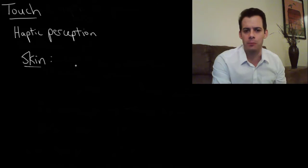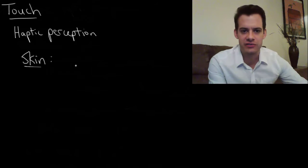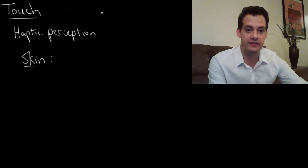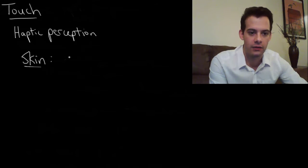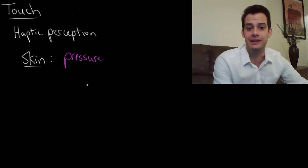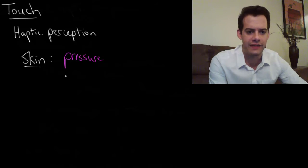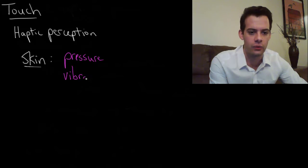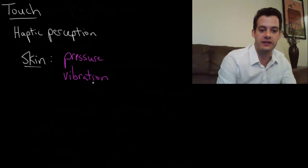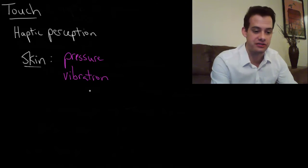So first we have things called mechanoreceptors and these are receptors that can detect properties of the things that we touch. So we can detect things like pressure. So we have cells that are specialized to respond to different amounts of pressure. And then we can also sense vibration. So we have specialized neurons in our skin that respond to certain frequencies of vibration.